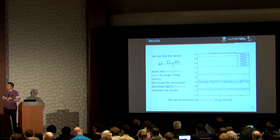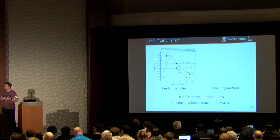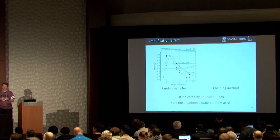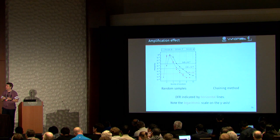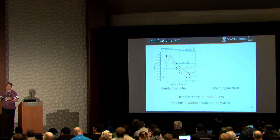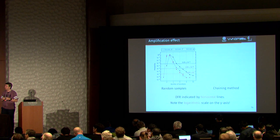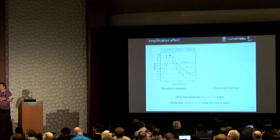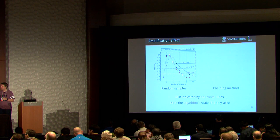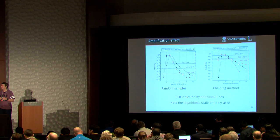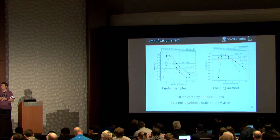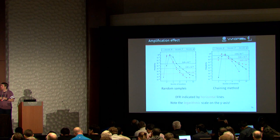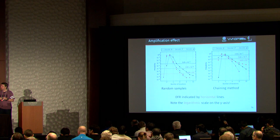All right. So let's take a look at the amplification effect that I was talking about. So this is how it looks like if we just use random sampling. So the decoding failure rate is indicated by the horizontal lines. And the red line is the best implementation where we have a decoding failure rate of around 10 to the minus 7. And if we look at the chain method, we see that it has increased to around 10 to the minus 2 or something like that. And note the logarithmic scale on the y-axis.